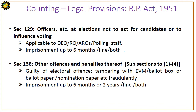The appropriate authority shall get the result published in the Official Gazette immediately. Section 129 is about officers at elections not to act for candidates or to influence voting. It is applicable to District Officers, Returning Officers, AROs, and polling staff. If a violation occurs, there is imprisonment up to 6 months or fine or both.